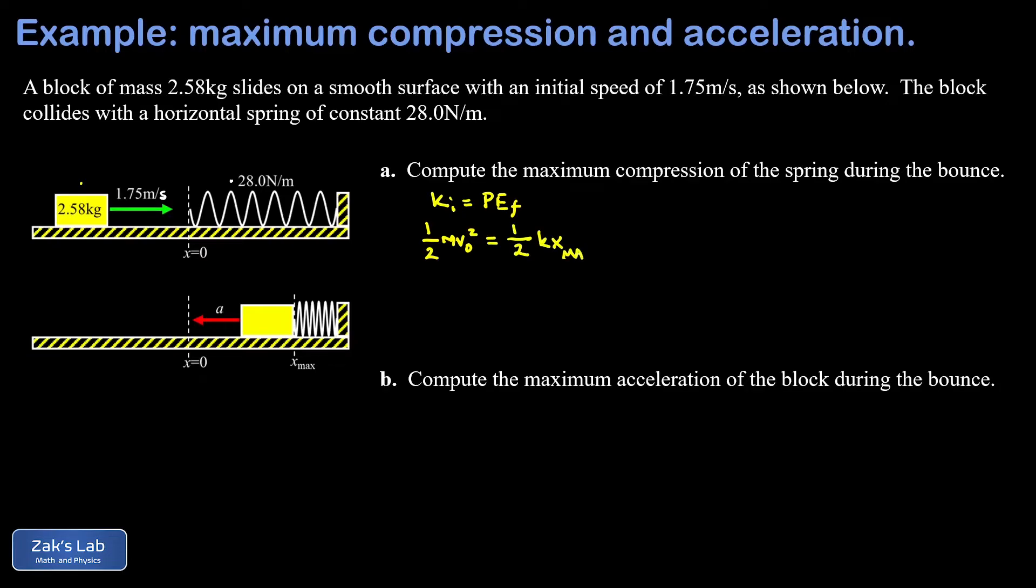We can multiply both sides by two and we're trying to solve for x_max. So we divide by k, then we square root the result, and I end up with the square root of mv₀ squared over k.